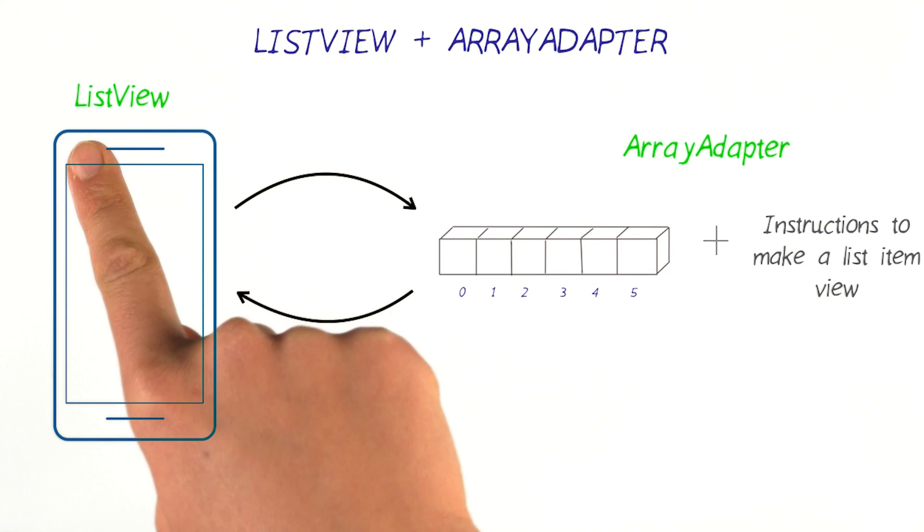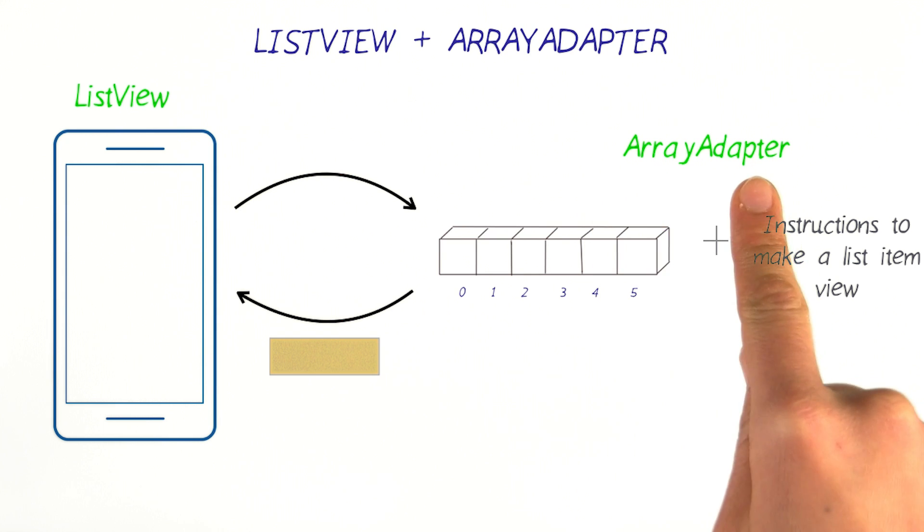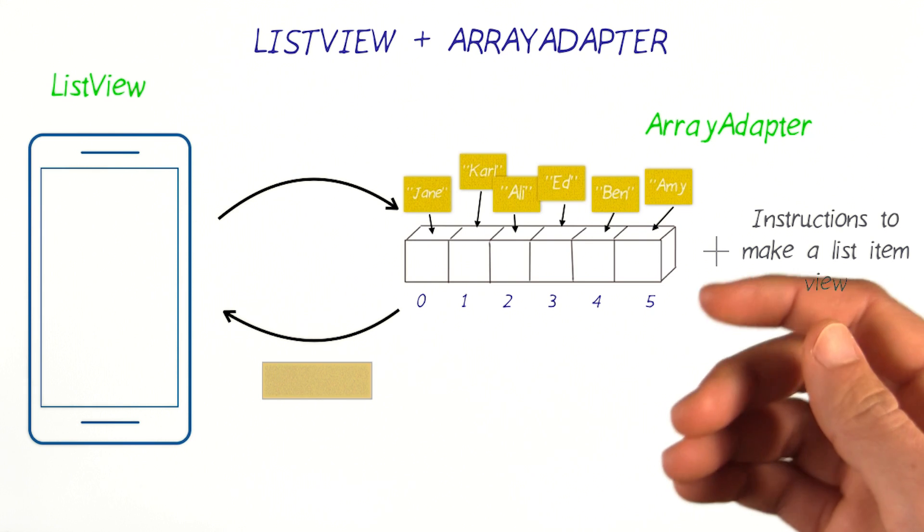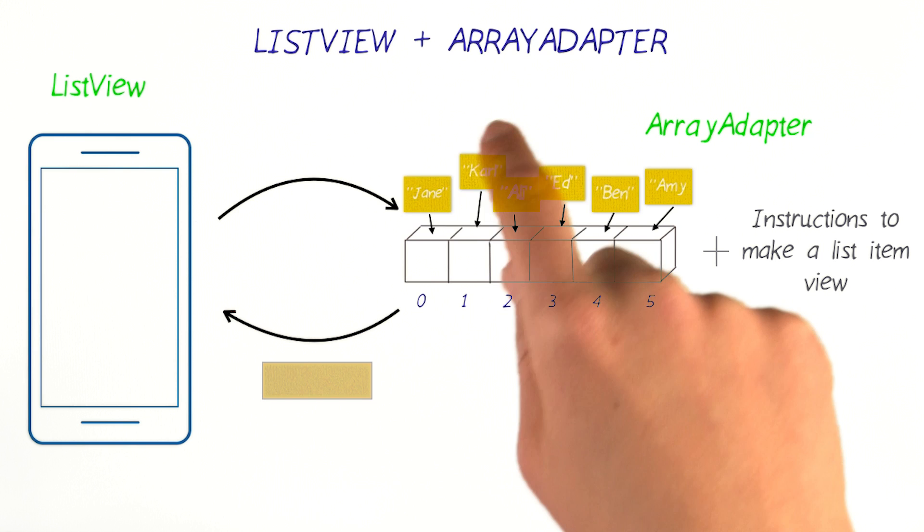You can think of a list view as being powered by the array adapter. Without the adapter, the list view is just an empty container. And when I say powered by, I mean that the array adapter holds onto the set of data that should be shown on the screen.